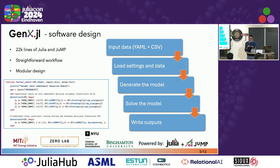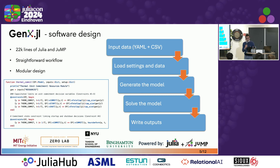GenX is written in Julia — about 20,000 lines of code — but the core is implemented in JuMP. The workflow is pretty straightforward: the user provides a set of inputs in the format of CSV or YAML files. GenX loads all the input, creates the optimization model using JuMP, then the model, which is a large matrix, is passed to the solver. Once the solver converges, GenX writes the output for the user.